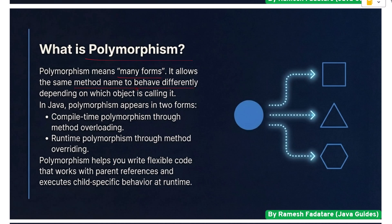What is polymorphism? Polymorphism means many forms. It allows the same method name to behave differently depending on which object is calling it. In Java, polymorphism appears in two forms: compile-time polymorphism through method overloading, and runtime polymorphism through method overriding. Polymorphism helps you write flexible code that works with parent references and executes child-specific behavior at runtime.